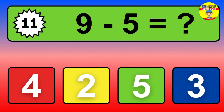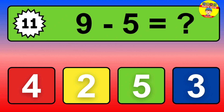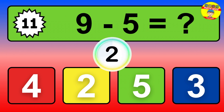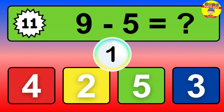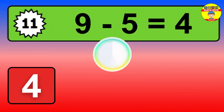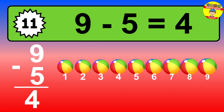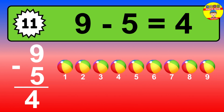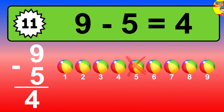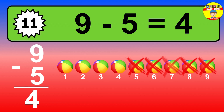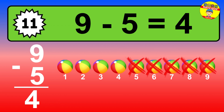Question 11. 9 minus 5 equals what? So the answer is 9 minus 5 is 4. Let's count it. 1, 2, 3, 4.